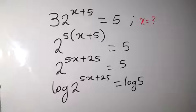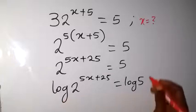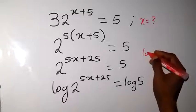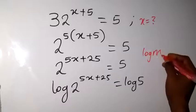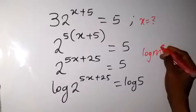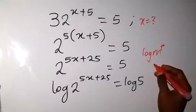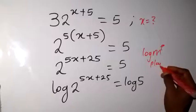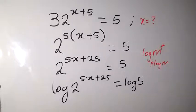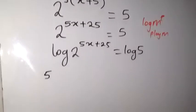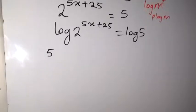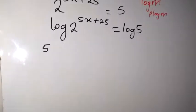So you have taken the log on both sides. And here we have to apply one of the laws of logarithm - that is when we have log m raised to power p, this is power log. This p can come to the back as p log m. So therefore everything here can come to the back here, and we now have 5x. So that will be 5x plus 25 log 2.